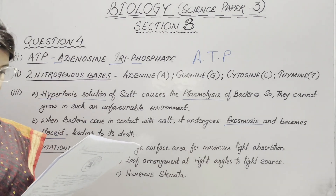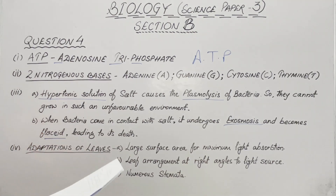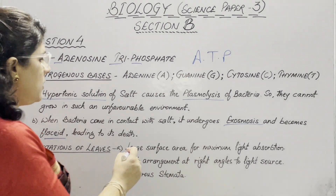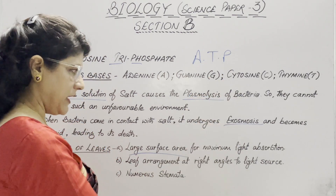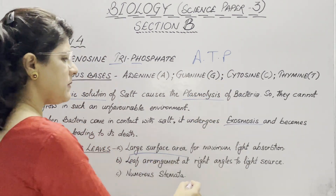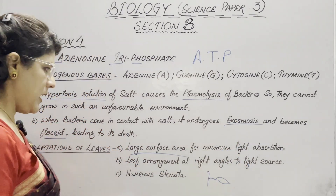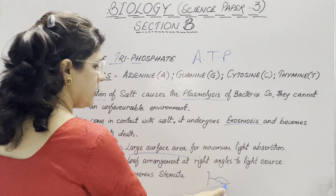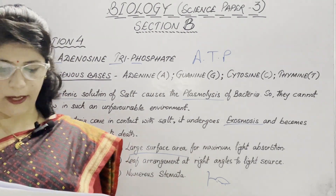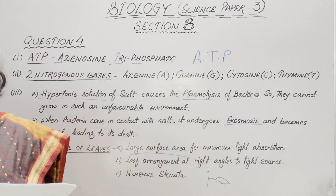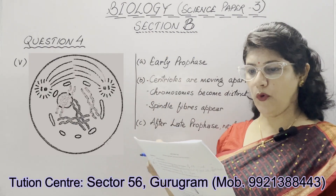Next, mention two adaptations in leaves to perform photosynthesis. We know: large surface area for maximum light absorption, leaf arrangement at right angles to the light source, and numerous stomata on the surface of the leaf. All these are adaptations by leaves to perform photosynthesis.